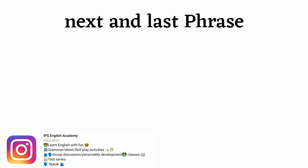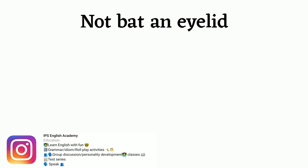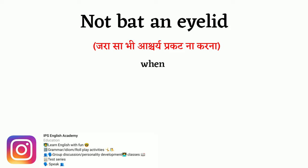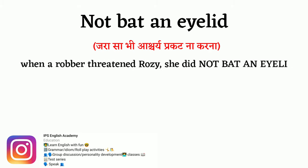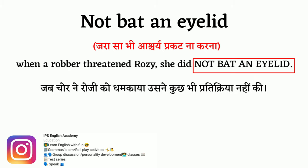The last phrase is 'not bat an eyelid,' which means 'jara bhi aashar chakit nahi hona' — to show no reaction at all. For example: 'When a robber threatened Rosie, she did not bat an eyelid' — meaning Rosie showed no fear or reaction when the thief tried to scare her.